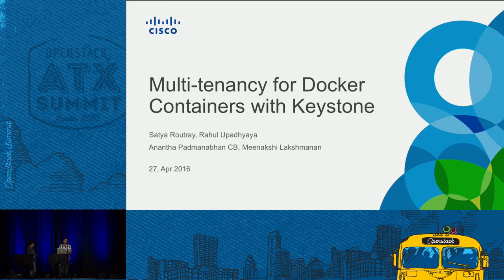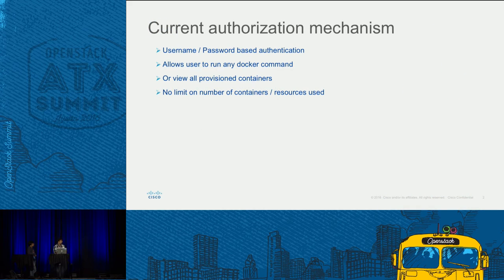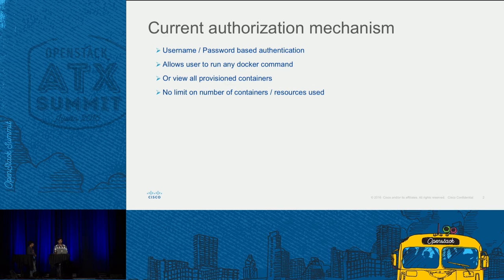We extensively worked on the compute side and LAN side, and with Cisco we've been working with a Cloud VPN product for the last couple of years. If you think of Docker, how do you authorize and authenticate? Currently you have user ID and password-based authentication, and once you get access to the Docker daemon, you can run any command, see all containers provisioned, with no limit on provisioning. We searched extensively and couldn't find a standalone Keystone integration with Docker, so this idea came into place.